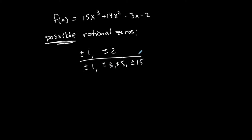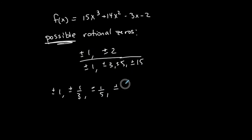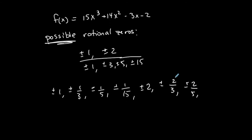We take plus or minus because we can have combinations of pluses and minuses. Each one of the numerator factors divided by each denominator factor: 1 divided by 1 is plus or minus 1; 1 over 3 is plus or minus one-third; 1 over 5 is plus or minus one-fifth; 1 over 15 is plus or minus one-fifteenth. Then 2 over 1 is plus or minus 2; 2 over 3 is plus or minus two-thirds; 2 over 5 is plus or minus two-fifths; and 2 over 15 is plus or minus two-fifteenths. These are all the possible rational zeros.